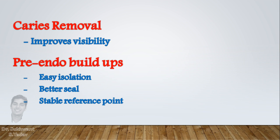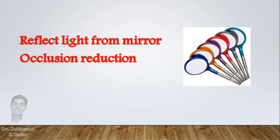To improve illumination in the chamber, use your mouth mirror to reflect light into the pulp chamber and look directly into the access cavity. Slight occlusal reduction also improves visibility and provides a stable reference point.